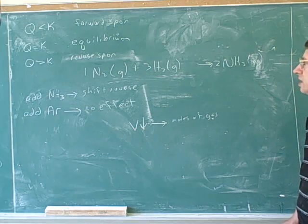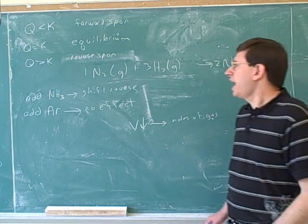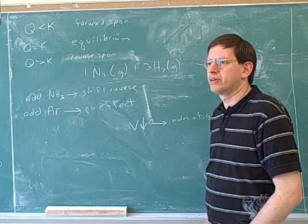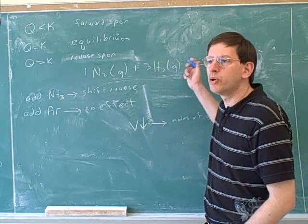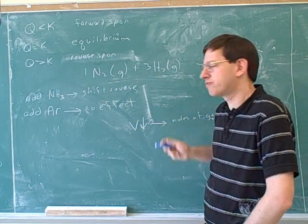So which way should this equation shift to decrease the number of moles of gas? To the right forward. Yeah. Every time we go forward, how many moles of gas do we use up? Four. Four. And how many do we replace that with? Two. Two.